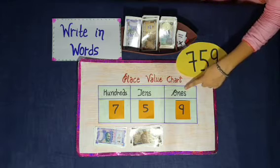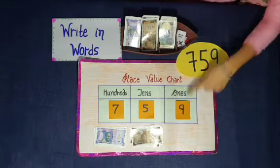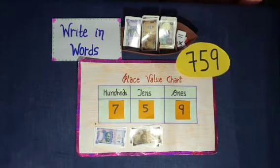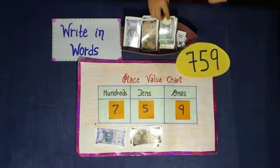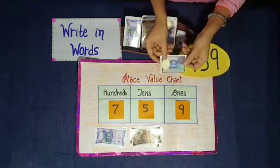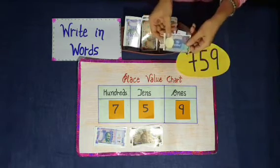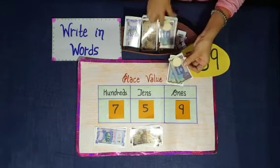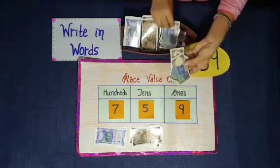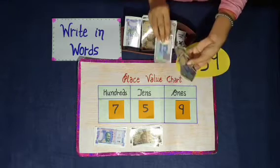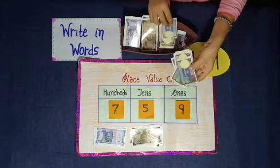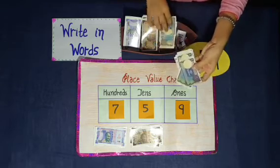At 1's place, digit 9. Digit 9 at 1's place — we will take 1 rupee notes for the 1's place. Now count with me: 1, 2, 3, 4, 5, 6, 7, 8, 9.